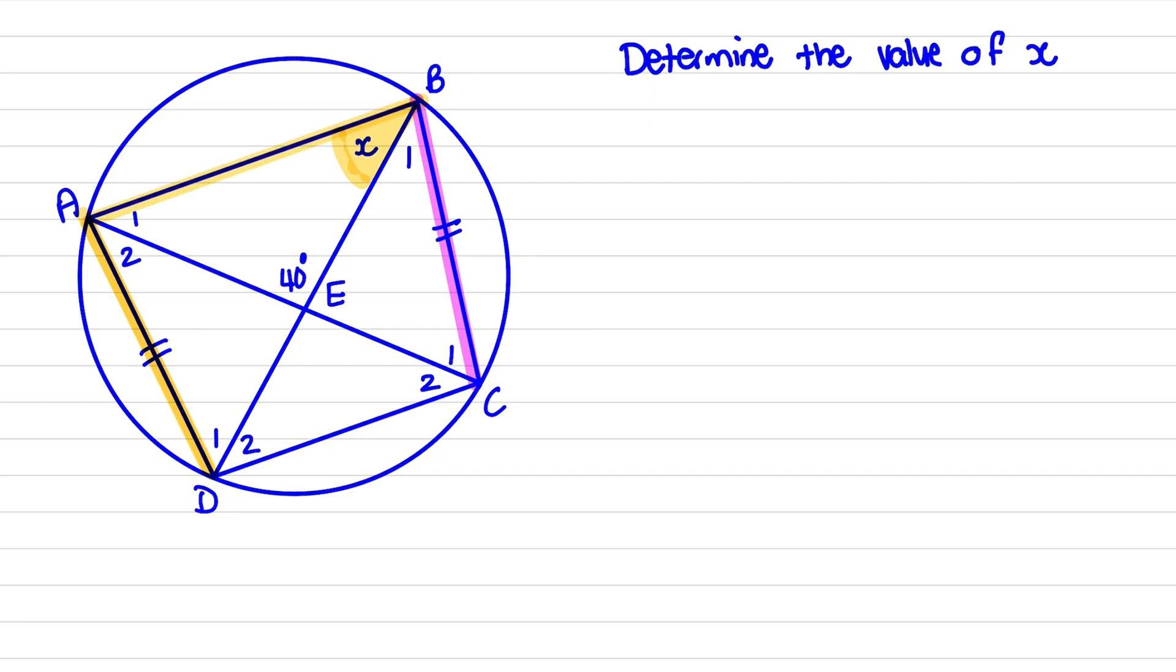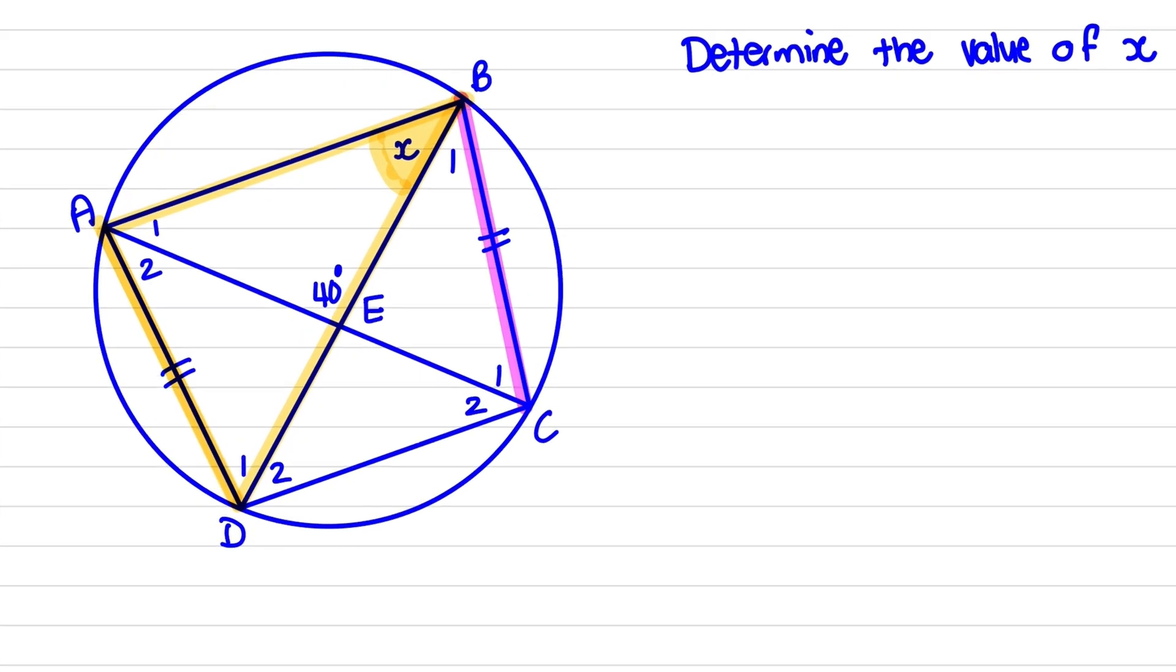And AD is equal to BC, so these are equal chords. That means that the angle formed at the circumference from the line BC at A1 would also be equal to x.